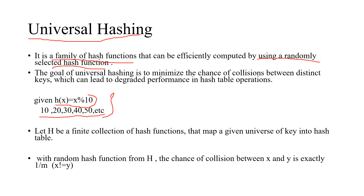If you are going to use a single hash function for an element, you will get many collisions — for example, four collisions. For that reason, universal hashing says it is better to use a family of hash functions. A set of hash functions is given, and for every element you randomly select a hash function, calculate the index, and store it in the hash table. The random hash function gives you a different index, reducing the number of collisions.